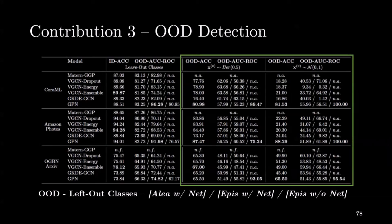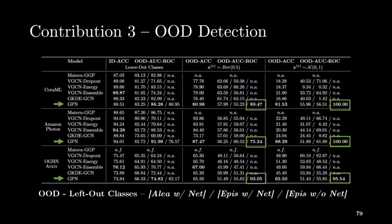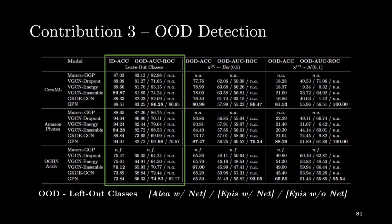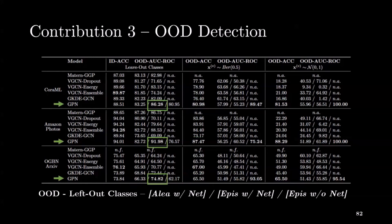For OOD detection with feature perturbations, we perturb the features of a single node at a time with Gaussian and Bernoulli noise. Then we compare the uncertainty estimates of the perturbed nodes with the uncertainty estimates of the unperturbed nodes. As desired, we observe that GPN detects well node-based anomalies with uncertainty estimation without network effects. Further, GPN can recover the correct predictions after the aggregation steps using neighbors' information, contrary to competitors. For OOD detection with left-out classes, which involves both features and neighborhood information, we remove the left-out classes from the training sets but keep them in the graph. Then we compare the uncertainty of the left-out classes with the uncertainty from the other classes. As desired, we observe that GPN detects well these anomalies with uncertainty estimation with network effects.